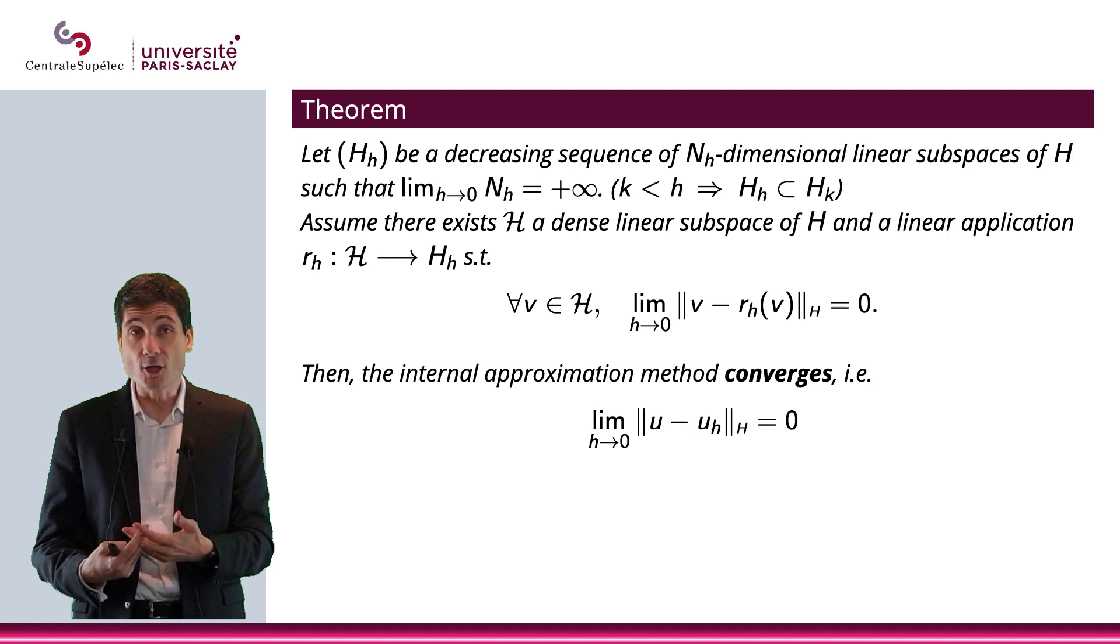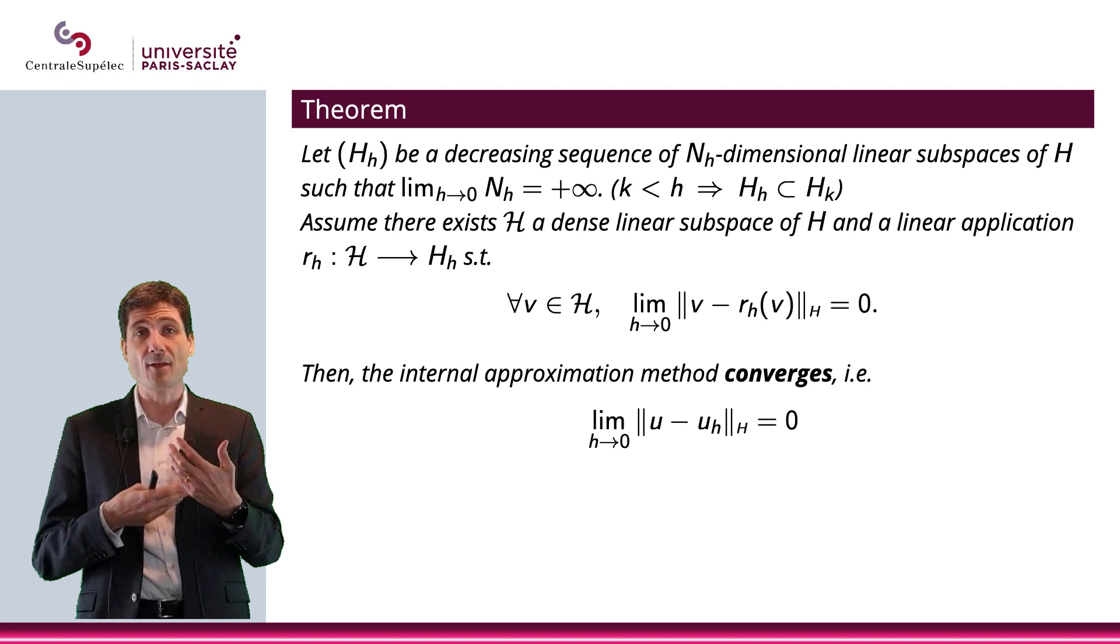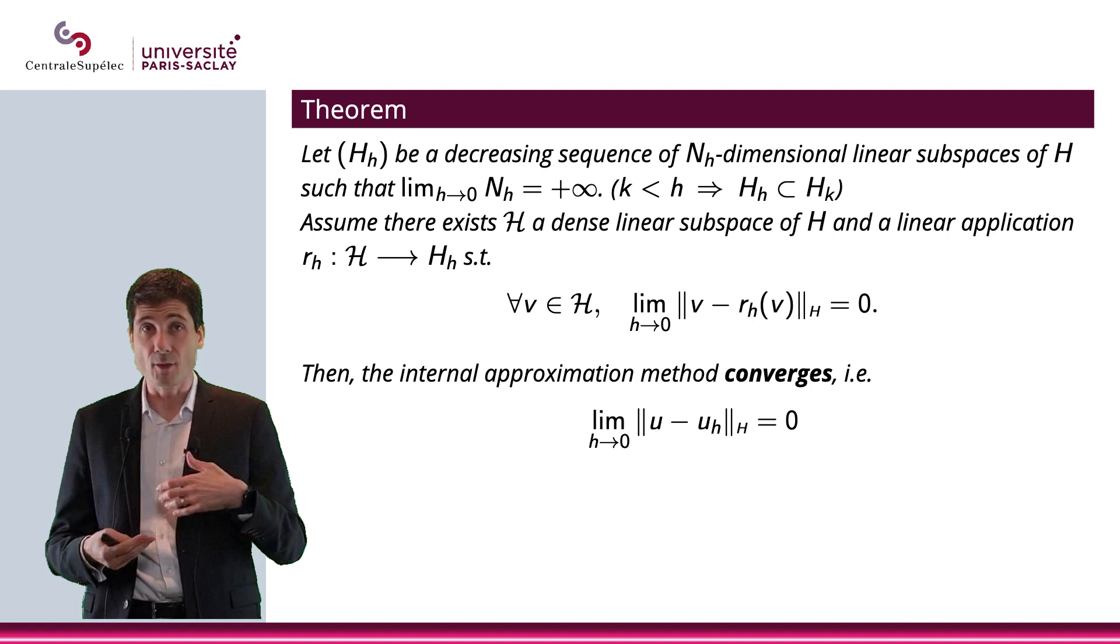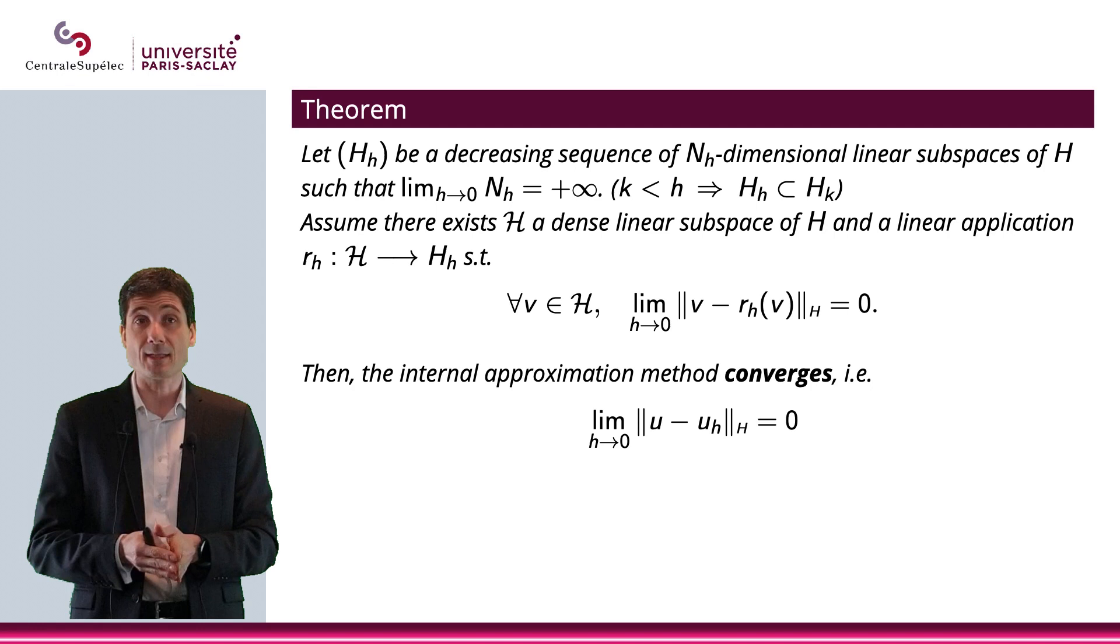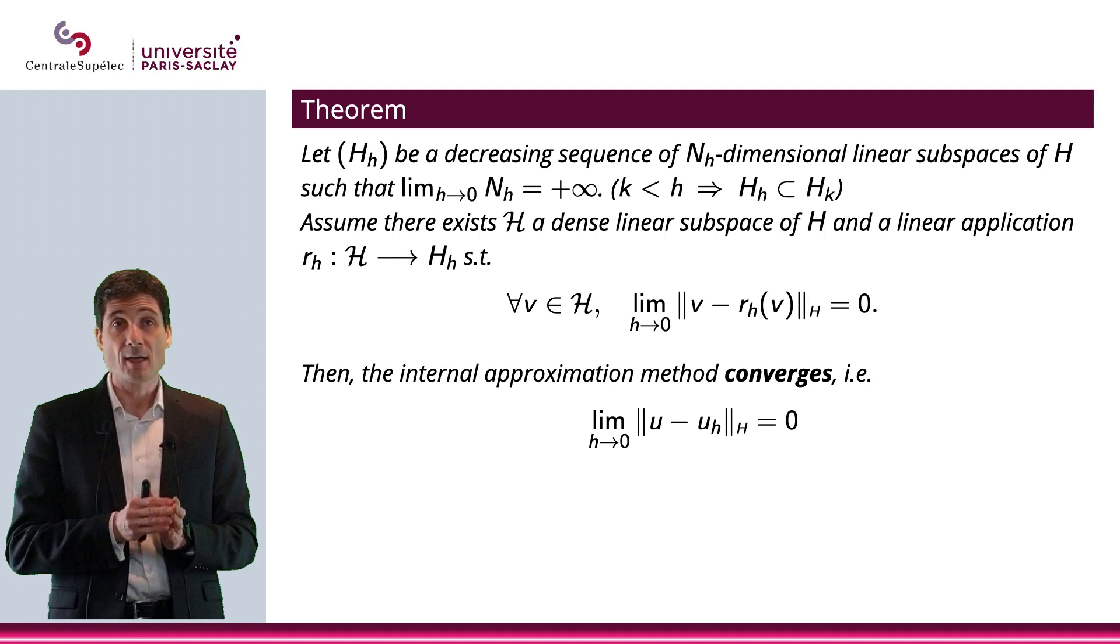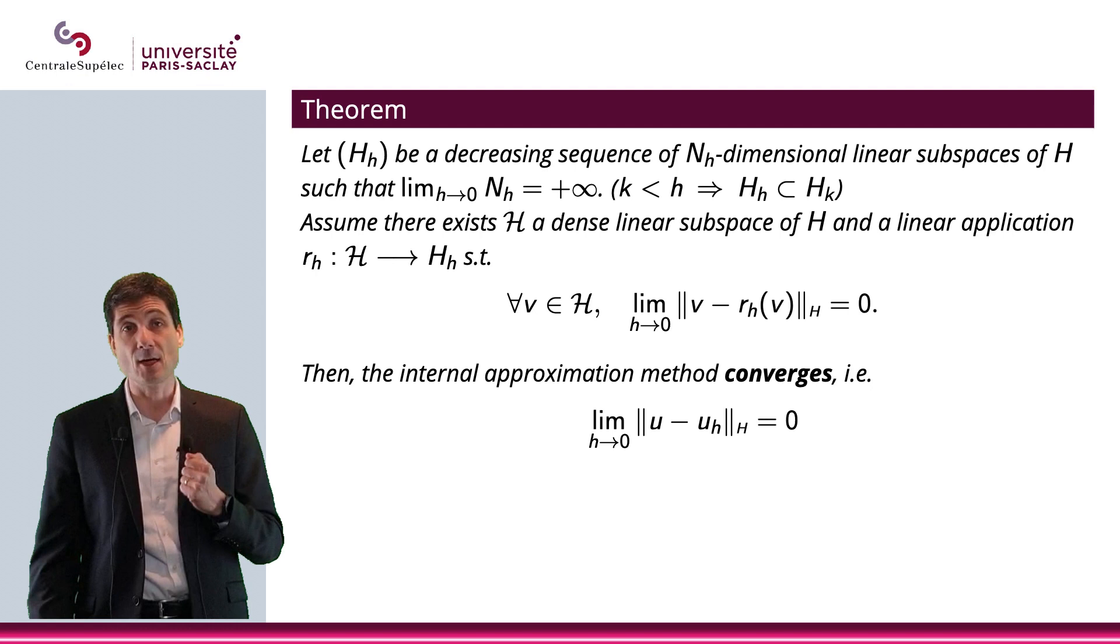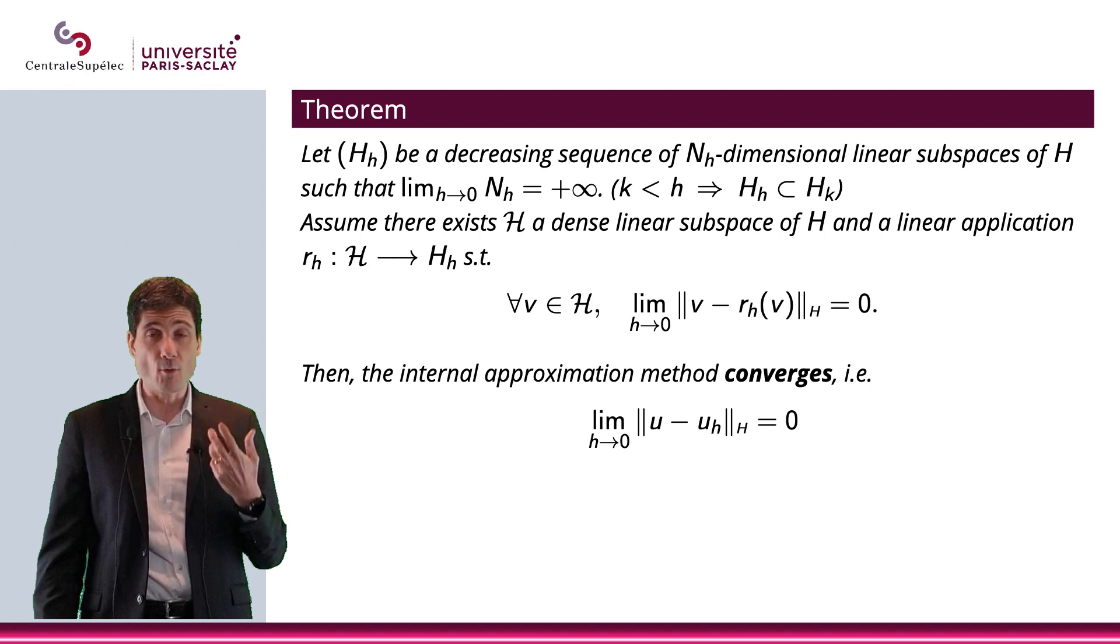So this leads to this theorem that will state that if (Hₕ) is a decreasing sequence of Nₕ-dimensional linear subspaces of H, decreasing, meaning that, basically, if K is more than H, then Hₕ will be included in Hₖ, and the limit of Nₕ will go to plus infinity. So really, when the dimension of the space will go to plus infinity. We assume there exists a curly H dense linear subspace of H and a linear application rₕ that goes from that curly H to Hₕ, such that for all v in that curly H, the limit of ||v - rₕ(v)||ₕ is equal to zero when H goes to zero.